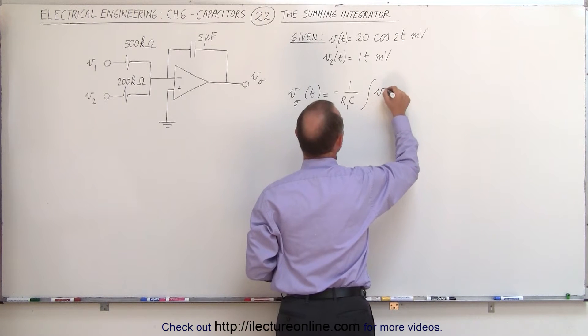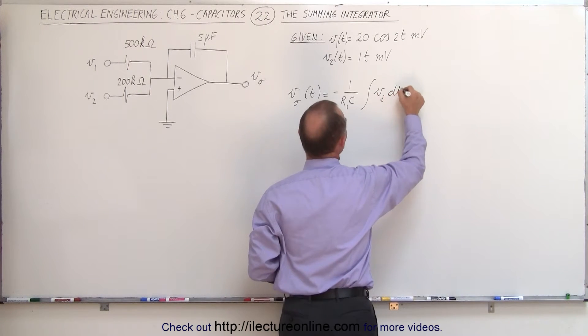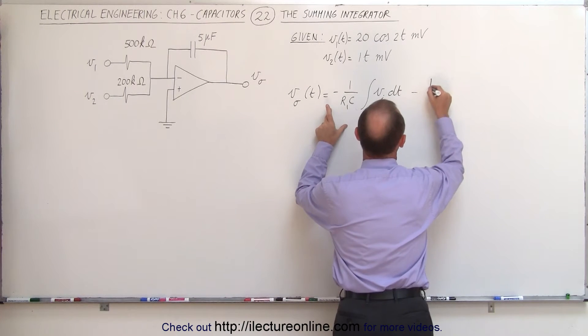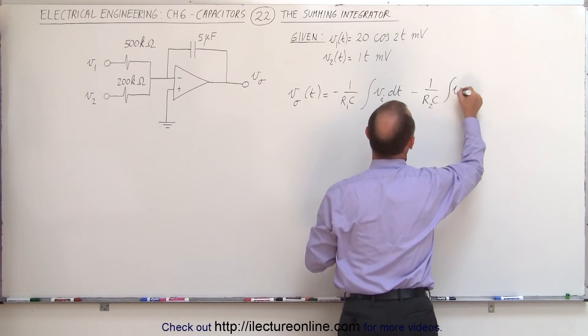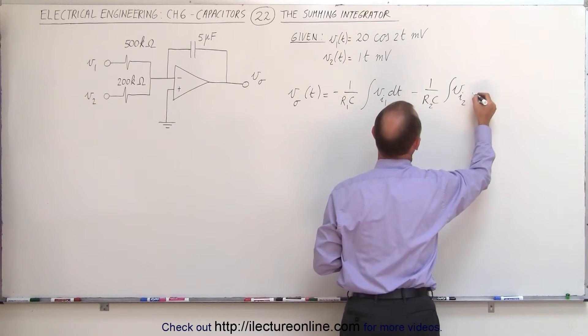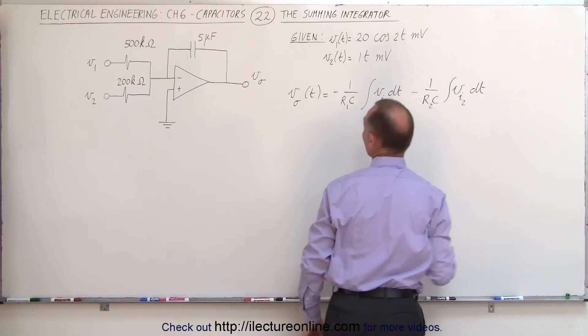times the integral of the input voltage times dt, and of course that's for the first source, minus 1 over R2C times the integral of V input, this would be of the first and the second input voltage times dt.